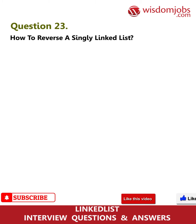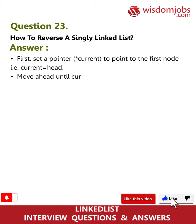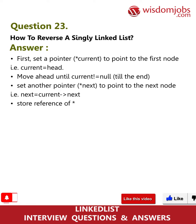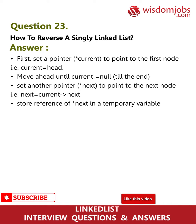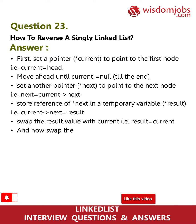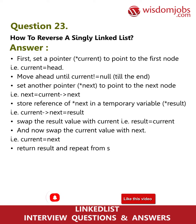Question 23: How to reverse a singly linked list? Set a pointer 'current' to point to the first node (current = head). Move ahead until current != null. Set another pointer 'next' to point to the next node (next = current->next). Store reference of next in a temporary variable 'result' (current->next = result). Swap result with current (result = current), then swap current with next (current = next). Return result and repeat. A linked list can also be reversed using recursion, which eliminates the use of a temporary variable.